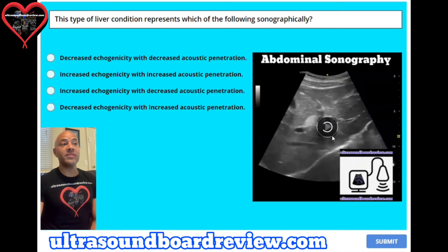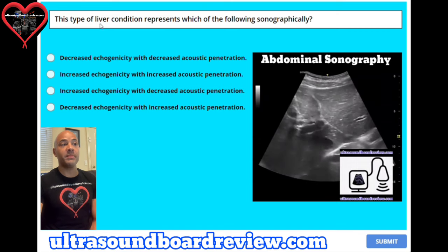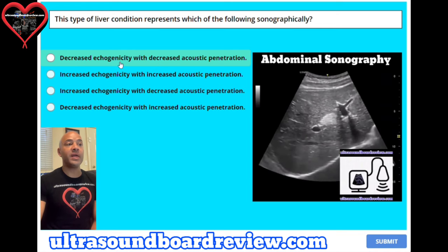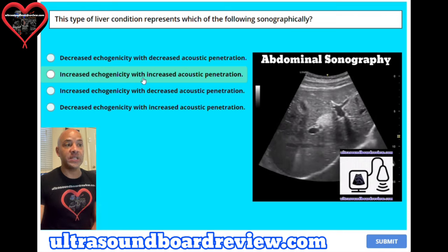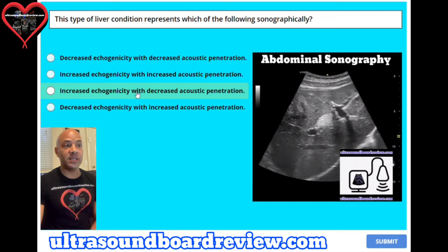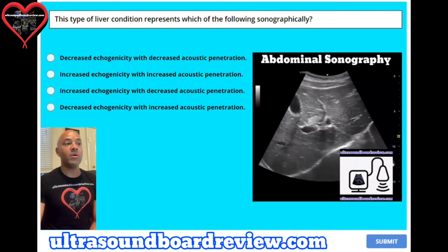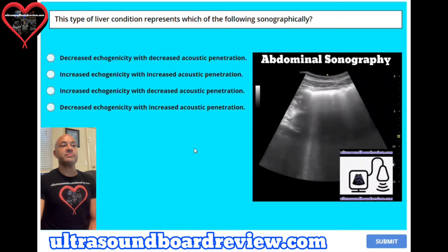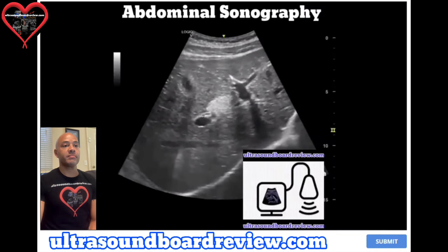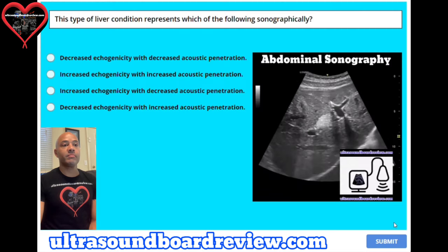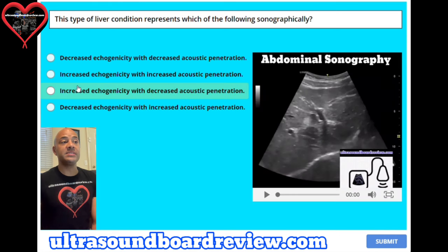Question 8. This type of liver condition represents which of the following sonographically? A. Decreased echogenicity with decreased acoustic penetration. B. Increased echogenicity with increased acoustic penetration. C. Increased echogenicity with decreased acoustic penetration. Or D. Decreased echogenicity with increased acoustic penetration. The answer is C, increased echogenicity with decreased acoustic penetration.